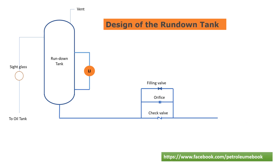Run-down tank design is based on parameters such as size and capacity. Accurate capacity of the run-down tank provides continuous flow of oil to the rotating equipment of the skid system under gravity during the coast-down time. Coast-down time is an indication of a faulty system and is defined as the method used to assess the mechanical degradation of rotating equipment.